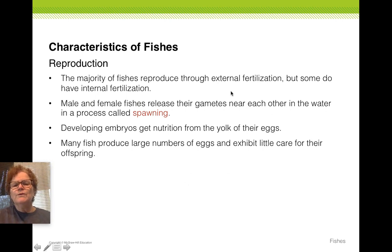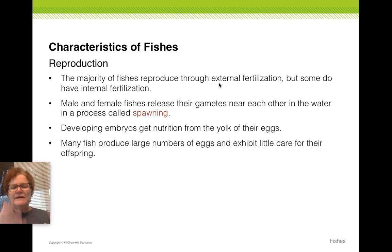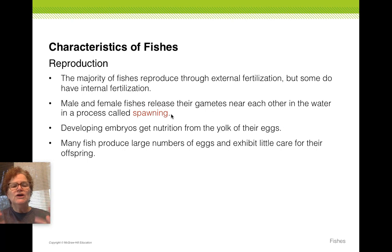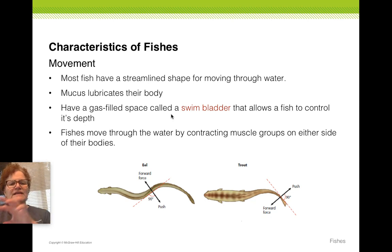Reproduction: most fish are going to reproduce through external fertilization. There are some that reproduce with internal fertilization — some sharks hold the developing shark babies inside their bodies, and guppies do that too. The process of external fertilization is called spawning, where males and females release gametes — egg and sperm — close to each other in the water. Also take a look at how they move and how the swim bladder plays a part in that, and how their muscles work against their vertebral column.